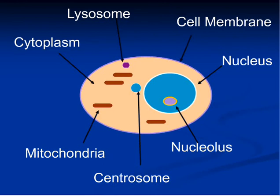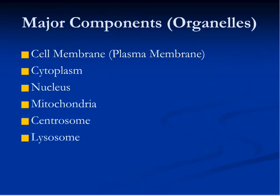Cell membrane provides protection and acts like skin. Cytoplasm is a jelly-like structure in which all organelles are present. The nucleus has DNA, which is responsible for giving specific functions to a cell and defines the type of cell. Lysosomes are involved in digestive functions. Centrosome is involved in reproduction and starts the process of cell division, known as mitosis. Mitochondria are the main energy factories of a cell and also play an important role in programmed cell death, known as apoptosis.